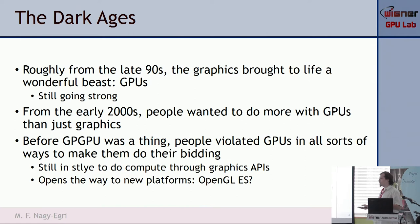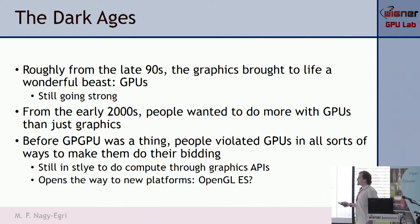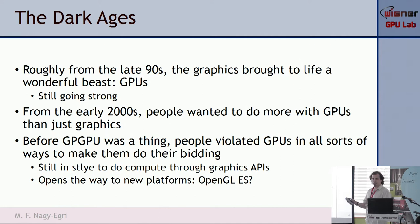How we got here: everyone knows that roughly from the 90s, graphics cards came to life and GPUs were going strong. From the early 2000s, after GPUs had defined what they are for, people realized these are actually very good data parallel processors. So they started to evaluate GPUs in exotic manners — doing lattice calculations in pixel shaders, using texture units and so on.